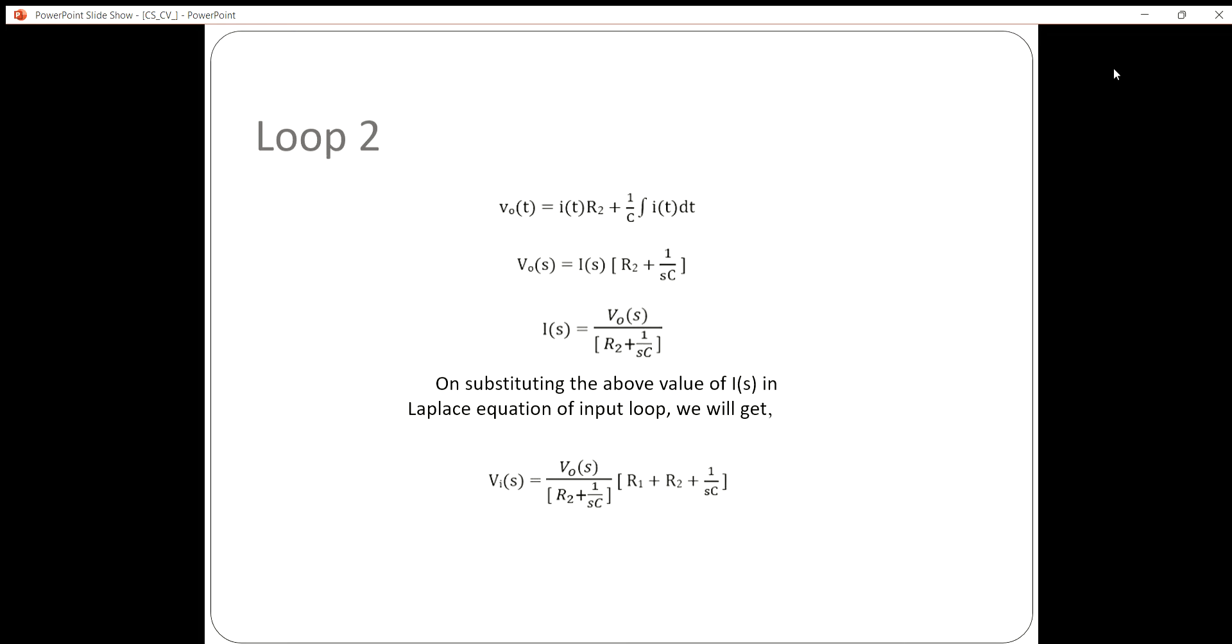On substituting the above value of I(s) in the Laplace equation of input voltage, we get V(s) = [V_out(s) / (R2 + 1/(sC))] × [R1 + R2 + 1/(sC)].